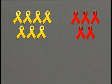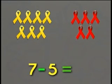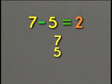So, the difference in number between the 7 yellow ribbons and the 5 red ribbons is 2 ribbons. We can write the number sentence in 2 ways.